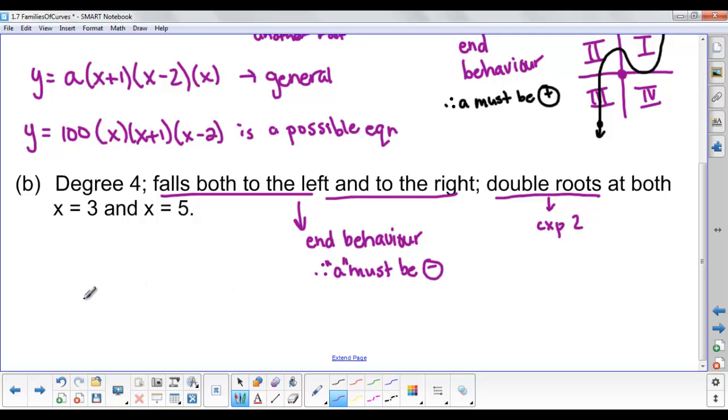Let's set up the general equation: y equals a. Root at 3 tells me I need to put x minus 3 in the bracket, but squared because it's a double root. And another root at 5, so x minus 5, and again squared because it's also a double root.